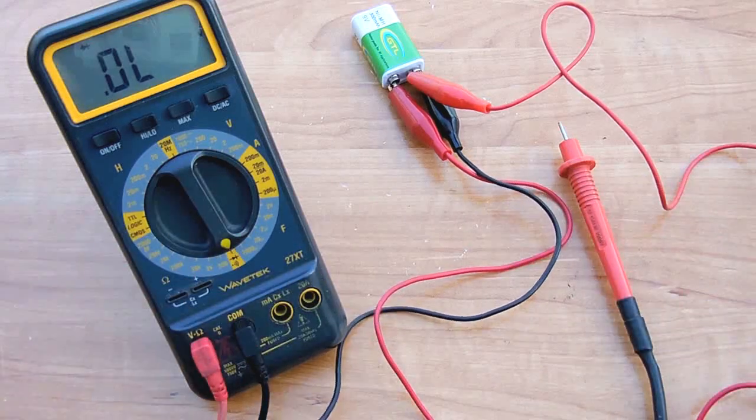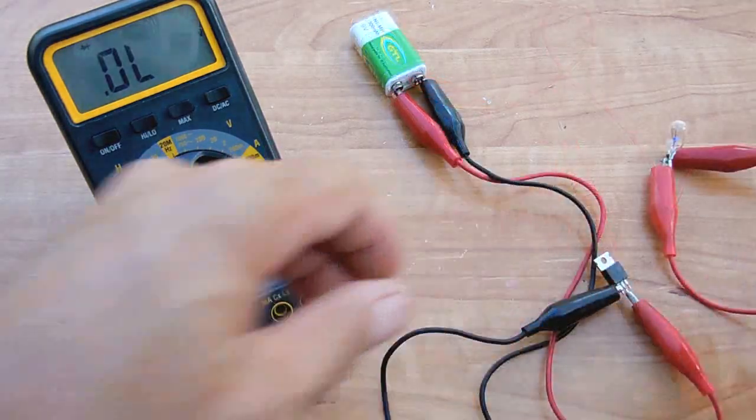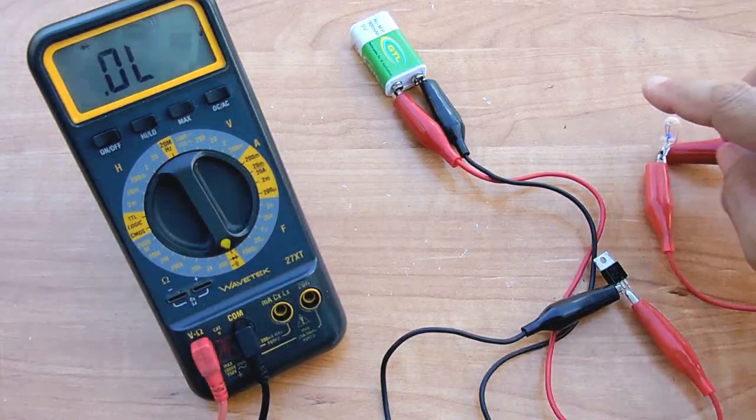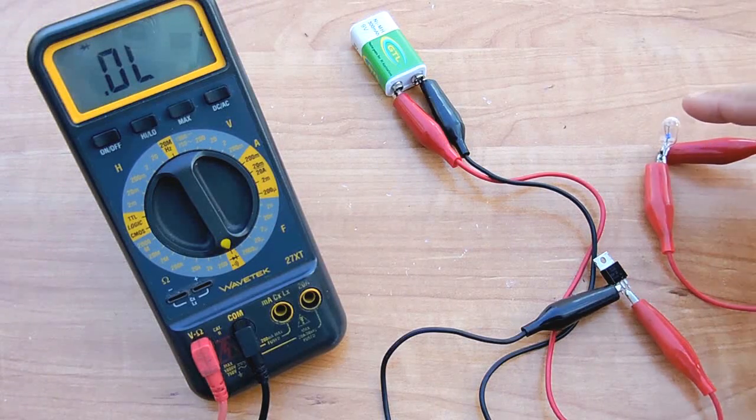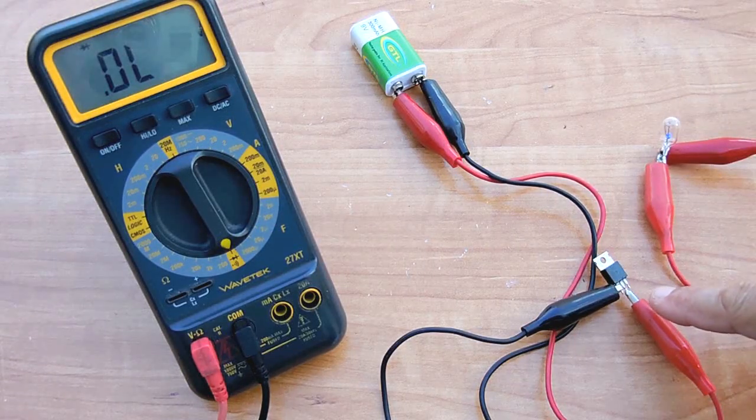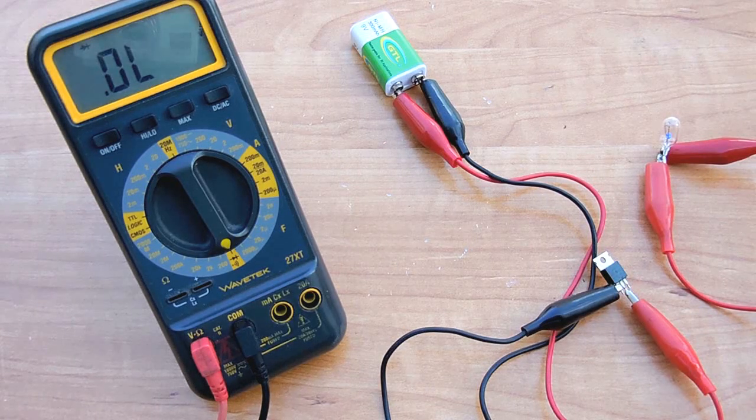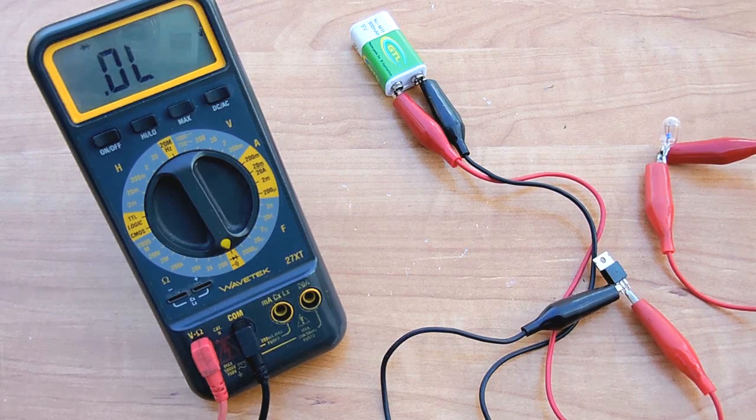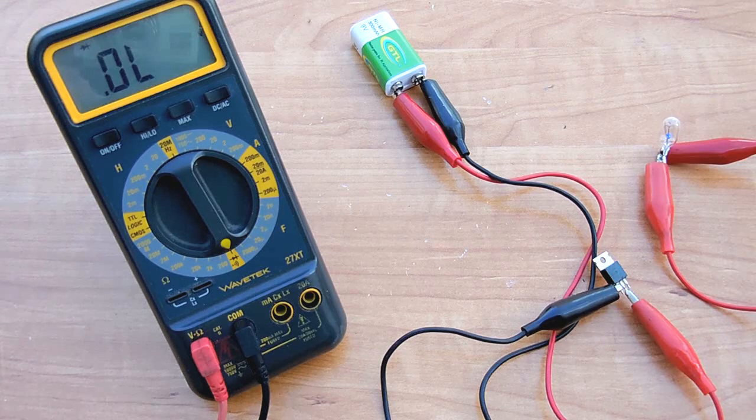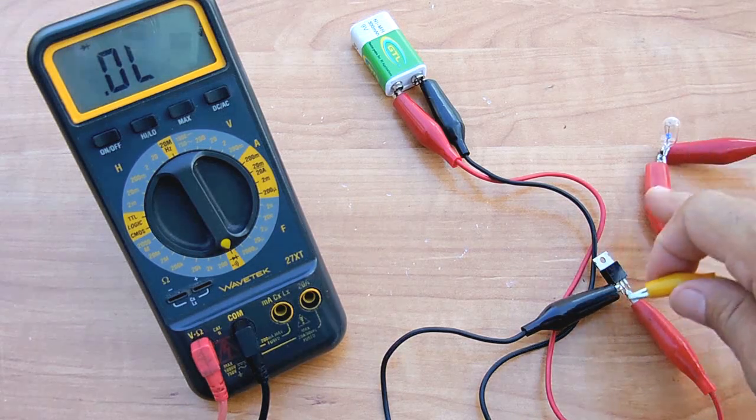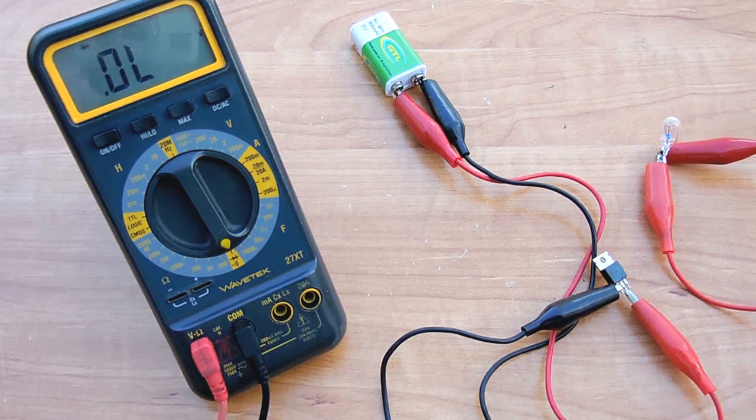Positive from the battery goes to the load, from the load into the anode, and then the cathode goes to the battery negative. Now in order to trigger this I'm going to take my resistor. I could take it from either side of the lamp, it doesn't make a difference. So I'll just take it from the battery positive.